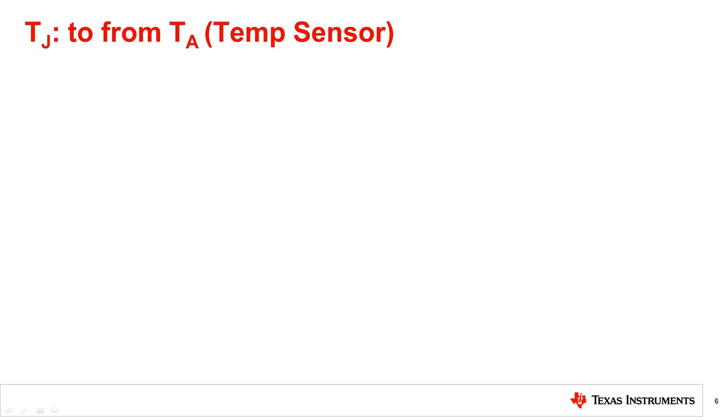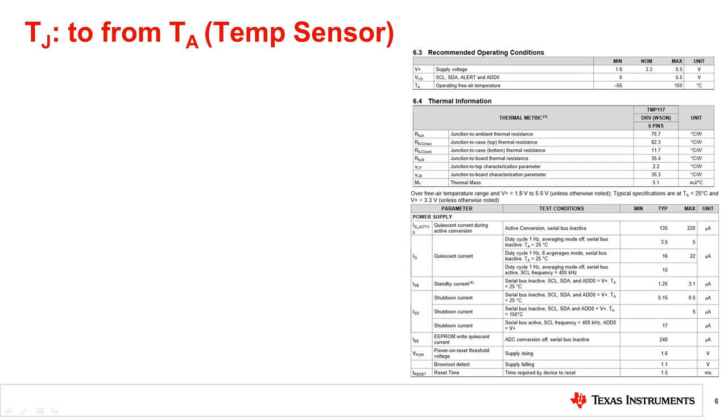In temperature sensors, the junction temperature is measured, so when making an ambient temperature measurement, it is important that the delta between the ambient and junction be minimal. As an example, let's take the recommended operating condition for a particular temperature sensor. For this device, the ambient temperature is 125 degrees Celsius max. The thermal resistance from junction to air is 70.7 degrees Celsius per watt. The maximum active current specified is 220 microamps, and we will assume a supply voltage of 3.3 volts. The maximum power dissipation can now be calculated by taking a product of the supply voltage and current.